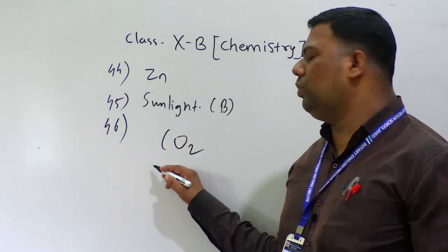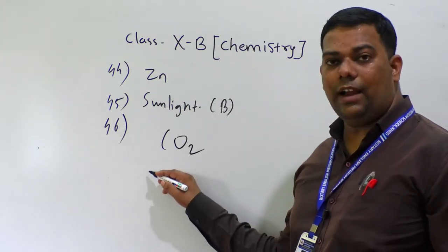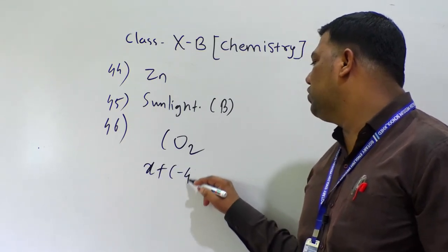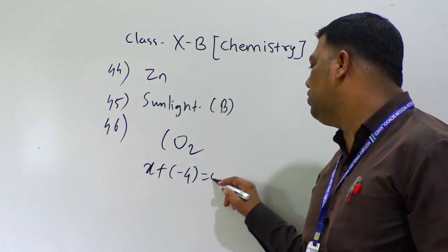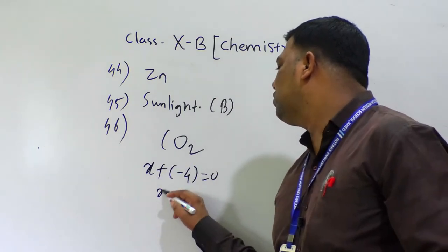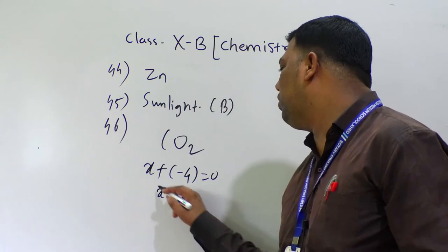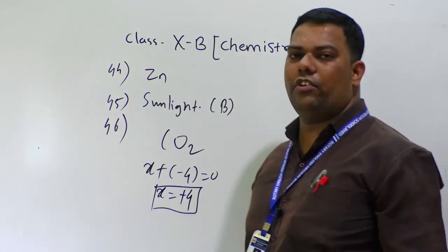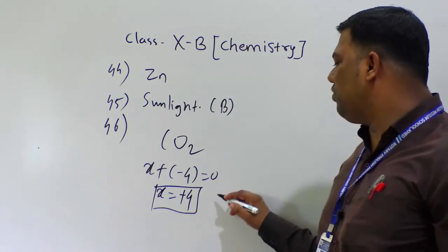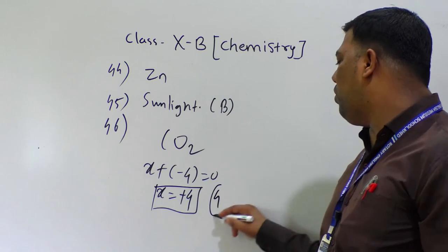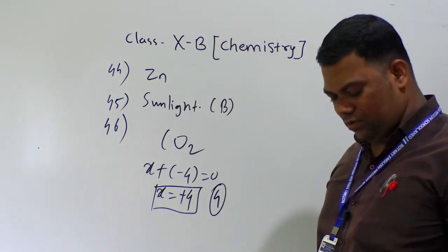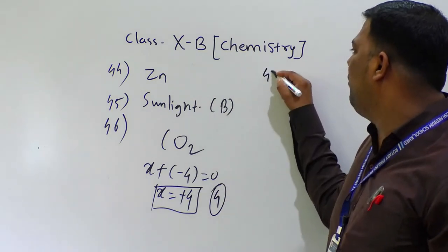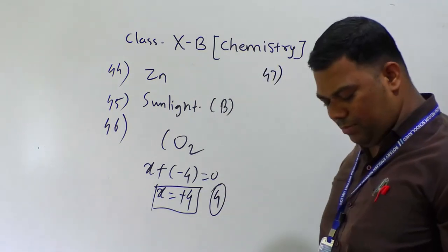Now numeral type questions. Question number 46: the oxidation number of carbon in carbon dioxide CO₂. Carbon is x, oxygen is minus two times two equals minus four. So x plus minus four equals zero, therefore x equals plus four. But in numeral type questions write only the numeral — so the answer is 4.